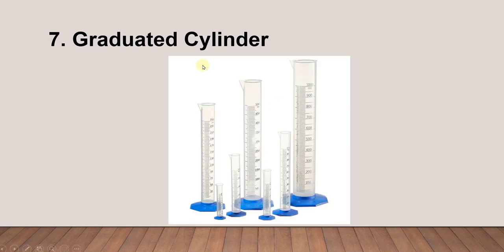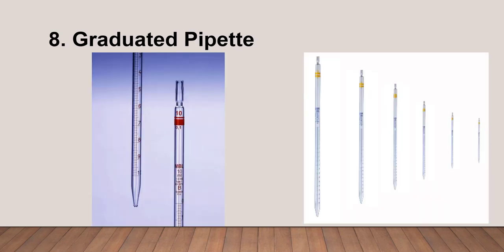Next is the graduated cylinder. You use this to transfer a large volume of solution. We can have different sizes, maybe from 5 ml up to 100 or 1000 ml. Next is the graduated pipette — the maximum in this case may be 10 ml. This pipette is more precise than the graduated cylinder, so if you want to transfer a precise volume you should use the graduated pipette.